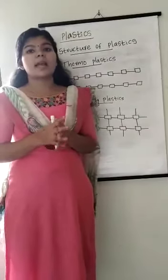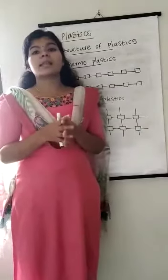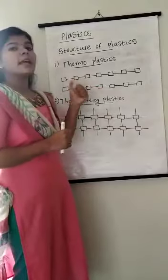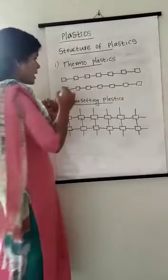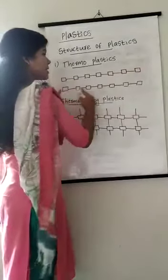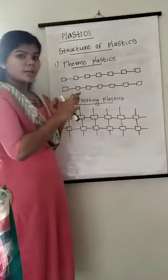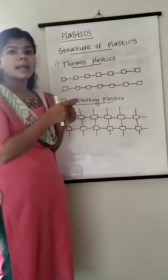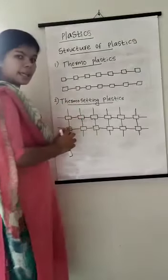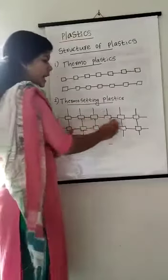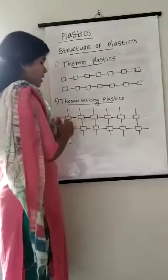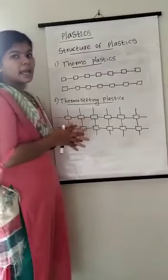So, thermoplastics can be softened by heating, whereas thermosetting plastics cannot be softened by heating a second time. The reason is the difference in their structure. In thermoplastics, the monomers are joined in a straight chain with no cross-linking between them — this is why they are flexible and can be bent easily. In thermosetting plastics, the monomers are cross-linked with each other, so they cannot be bent, they are not flexible, and they appear hard.